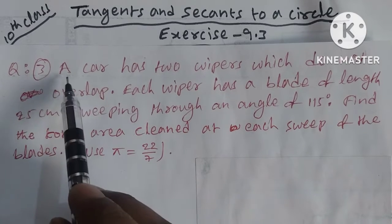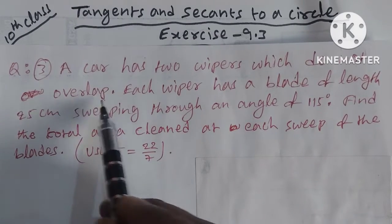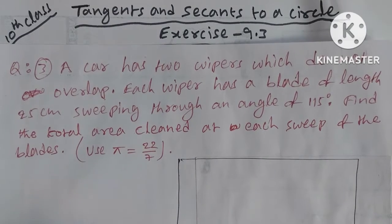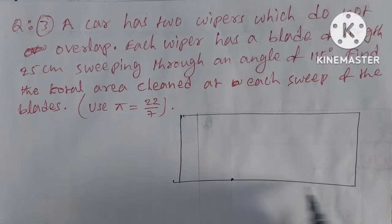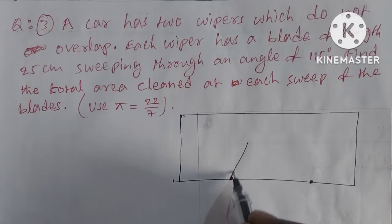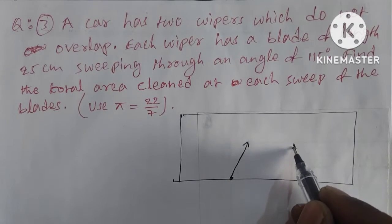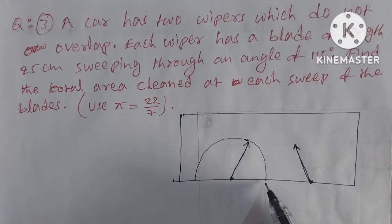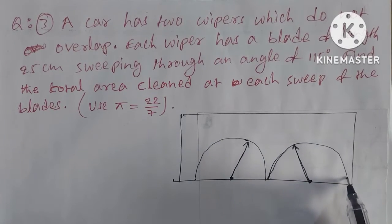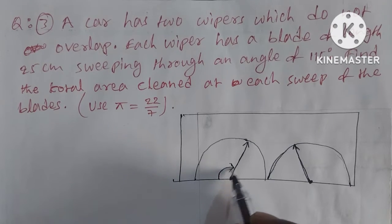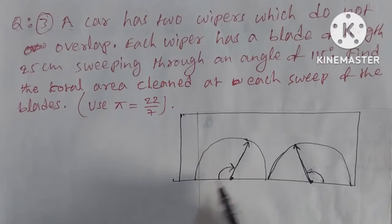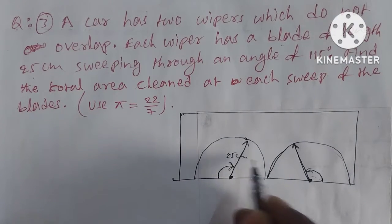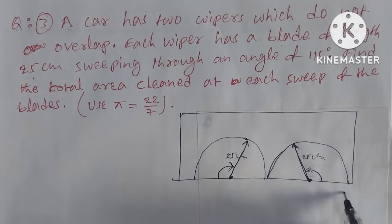Question number 3: a car has two wipers which do not overlap. This is a car with two wipers. One wiper is like this — if you are wiping, you can wipe this area. This is the one wiper — it is nothing but the radius.